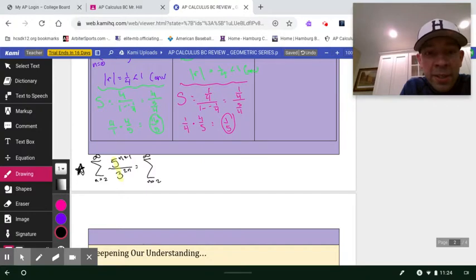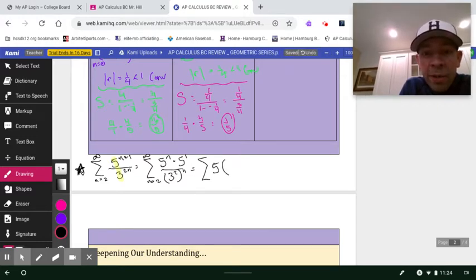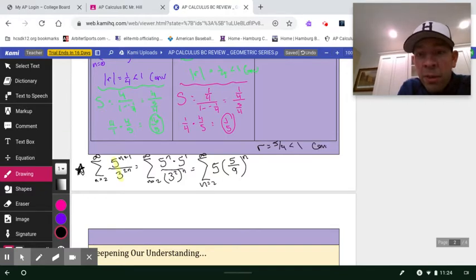How could you rewrite this? So you've got five to the n multiplied by five to the first. And on the bottom, you could say I've got three squared raised to the n. That's one nice way to rewrite it. So as you start to clean that up, you're going to get a coefficient of five. And then you've got this common ratio of five, not five thirds, but actually five ninths because of that squared sign. Our index is at two to infinity. So we could say my R is equal to five ninths. That's less than one. The series converges.